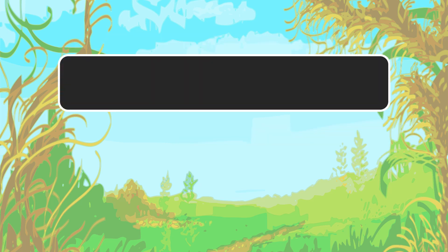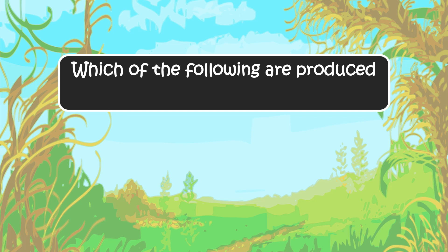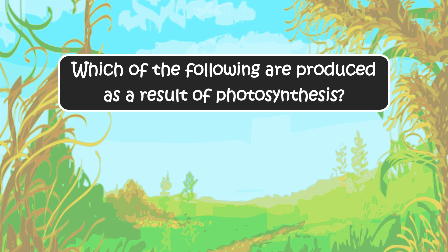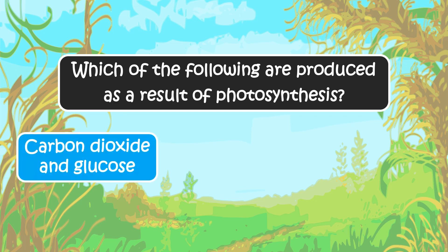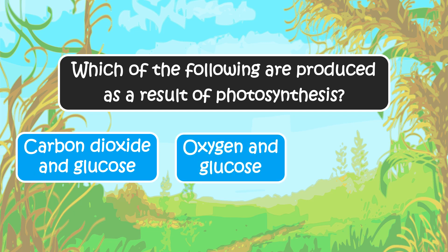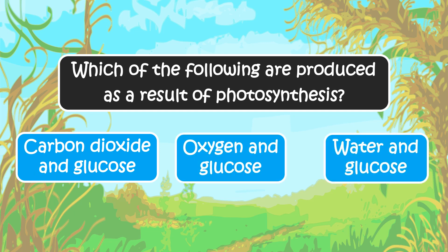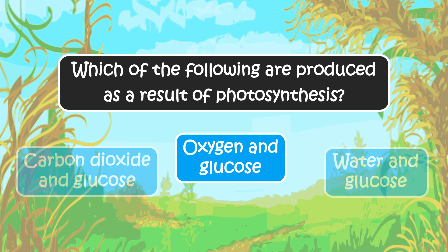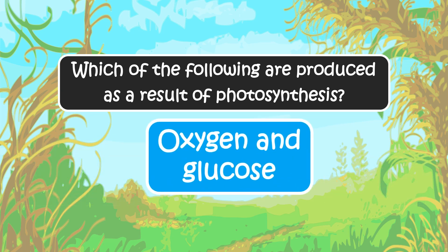The next question: which of the following are produced as a result of photosynthesis? The options are carbon dioxide and glucose, oxygen and glucose, or water and glucose. The right answer is oxygen and glucose.